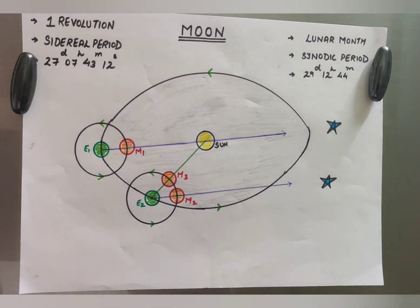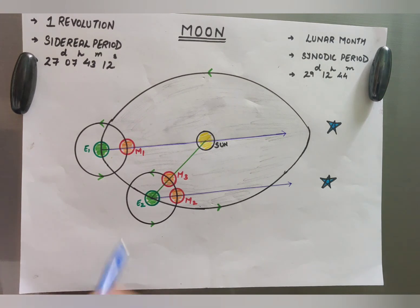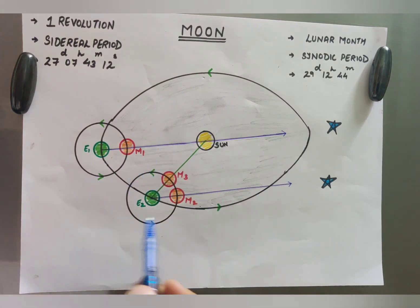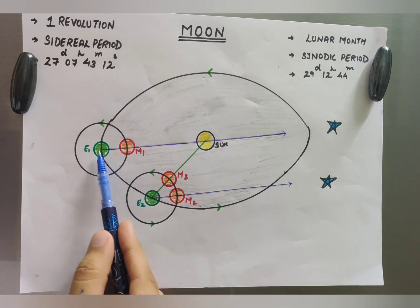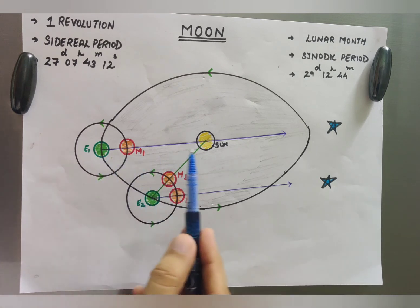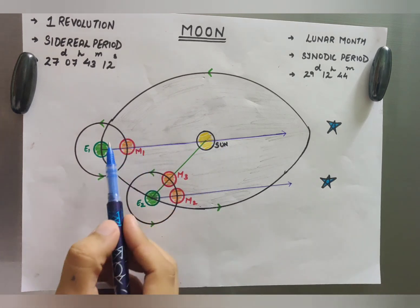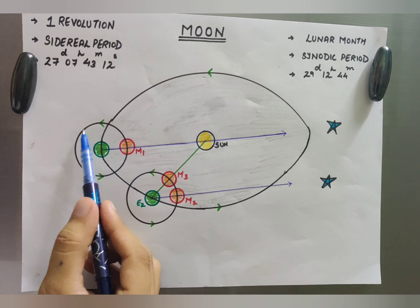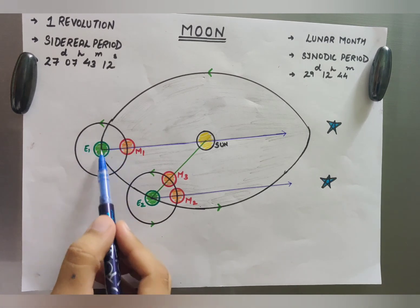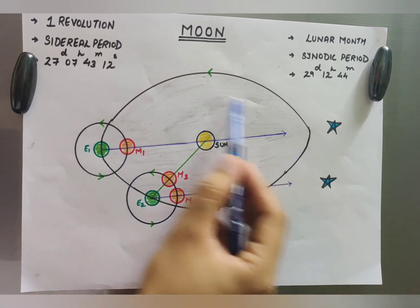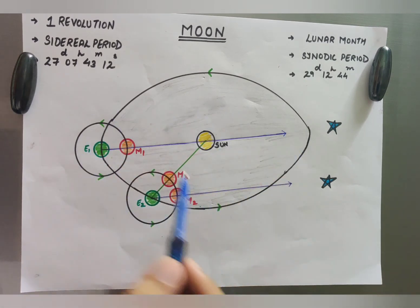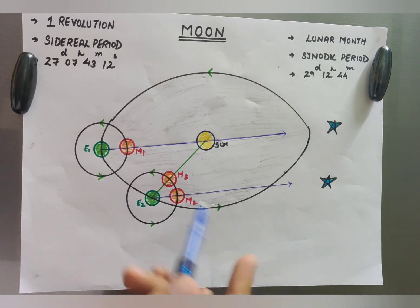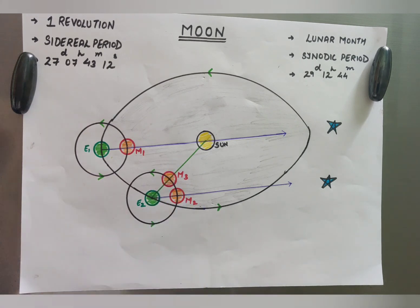Here you can see I've made a colourful diagram so that we understand a little better. This is earth, this is moon, this would be sun. Now as we know, moon goes around the earth and earth goes around the sun. This is a very basic thing that we need to start with.